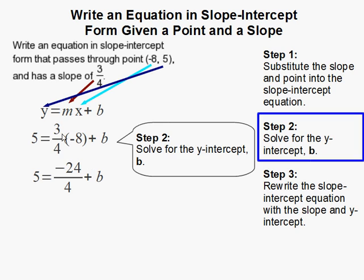Now I'm going to simplify 3 over 4 times negative 8 is negative 24 over 4. That simplifies to negative 6 because you're dividing here and if the signs are different you get a negative. Then to isolate b you add 6 to both sides of the equal sign and b is equal to 11.